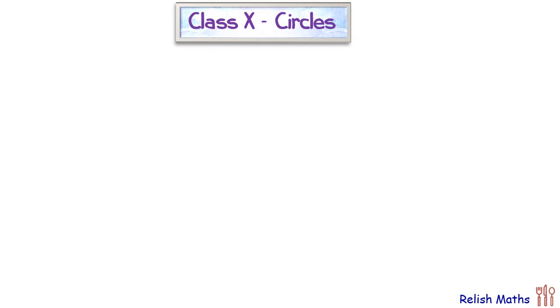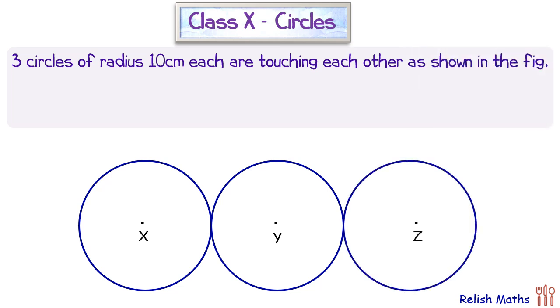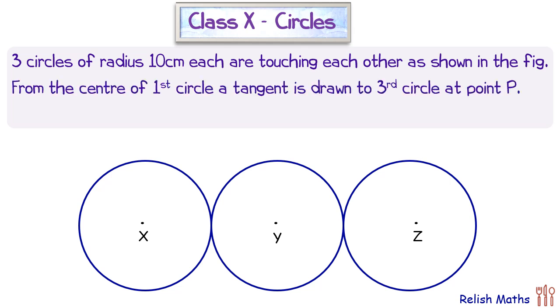Let's take this interesting question from the circles chapter. We have three circles of radius 10 cm touching each other. We are drawing a tangent from point X, the center of the first circle, to the third circle meeting at point P.